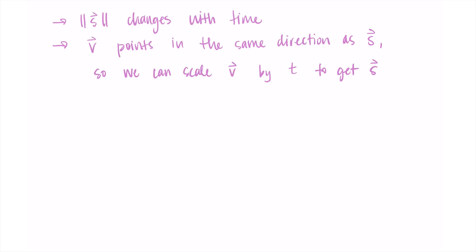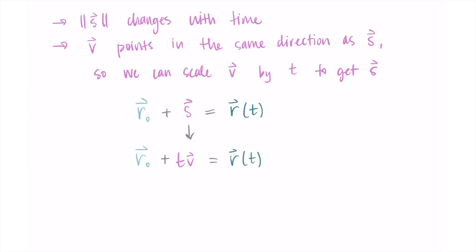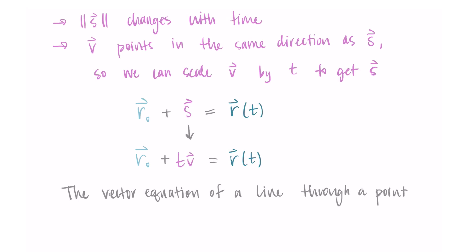Basically, the s vector on the line is what we're looking for — we don't know the equation of the line, but we were given a direction vector v for the line to go. So putting this together: if r-naught plus s equals r of t — that's our vector equation — I can now replace s with t times the vector v. Scaling by time, it's going to change and move depending on the time, and this is our vector equation of a line.